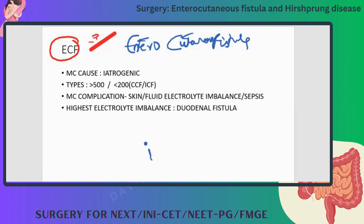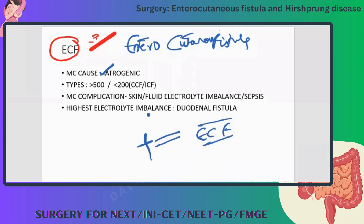So what happens is when we operate — it is also most commonly iatrogenic — when we operate, accidentally we may injure a part of the bowel. This will cause leakage of the contents through the abdominal wound onto the skin, causing an enterocutaneous fistula.